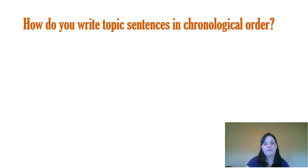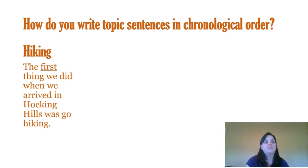So here are some ways I could write the topic sentences for these paragraphs. My first paragraph will be about hiking. My topic sentence can say, the first thing we did when we arrived in Hocking Hills was go hiking. Notice I used the transition word first to signal to my reader that I'm about to give a series of events.